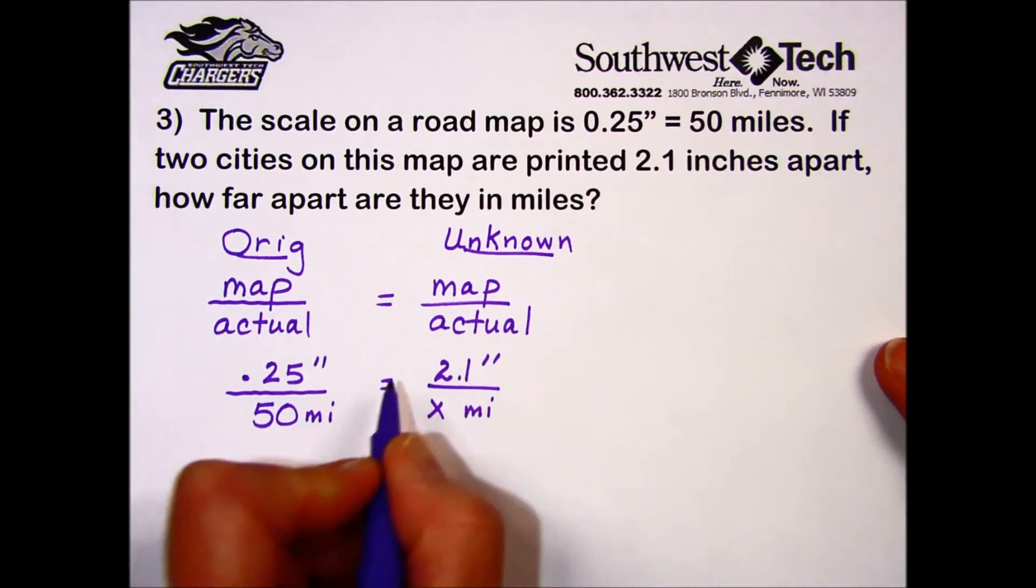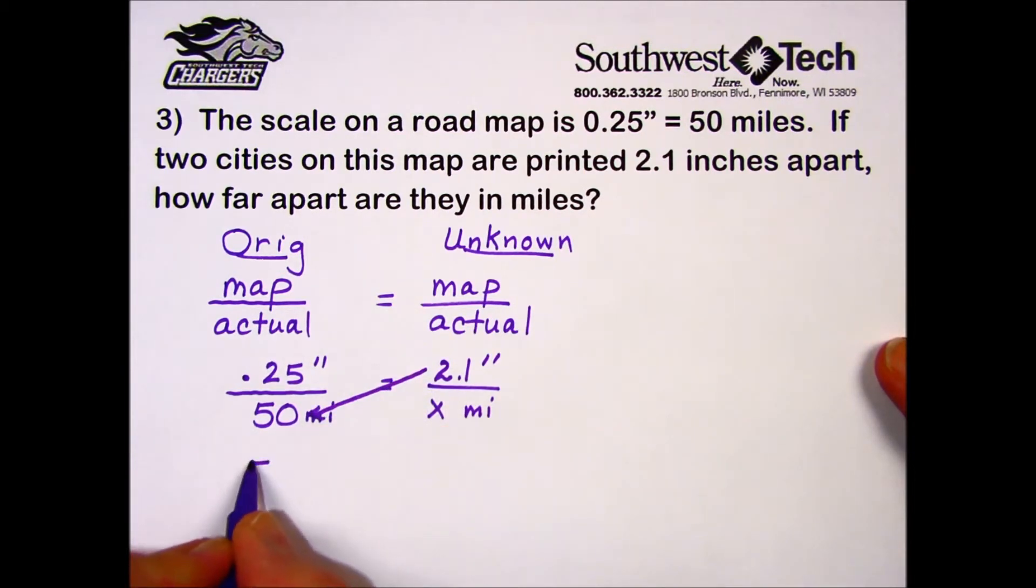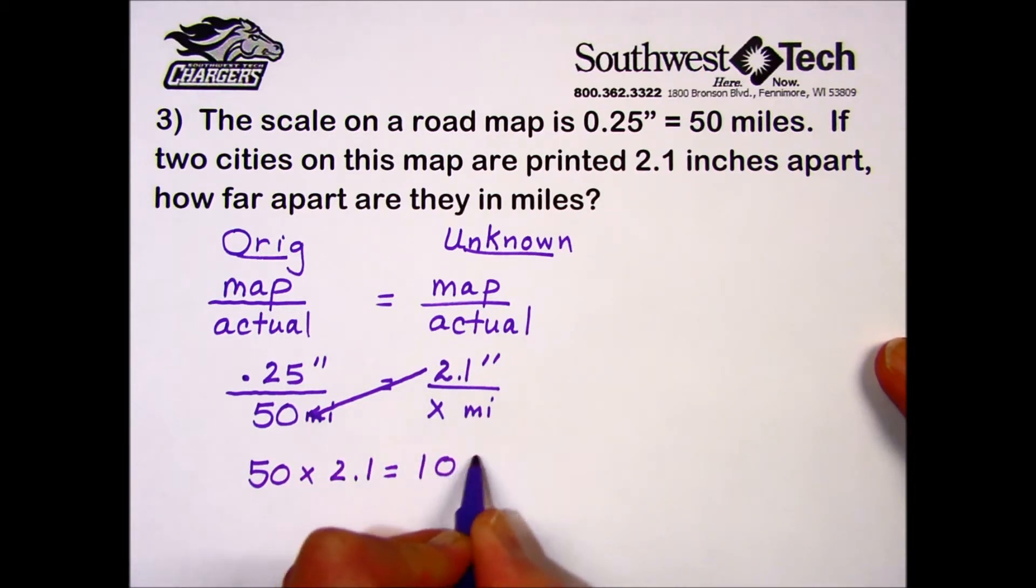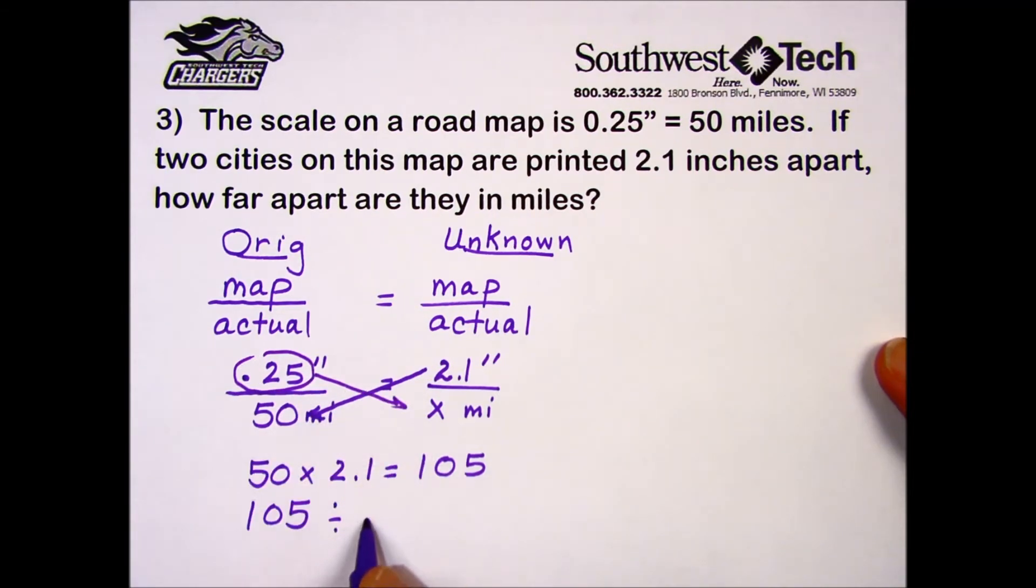With this proportion, to solve it, we're going to use our cross multiplication. We'll multiply the diagonal that has the two numbers in it resulting in 105. We'll take that product and divide it by the number in the other diagonal with the variable, 0.25.